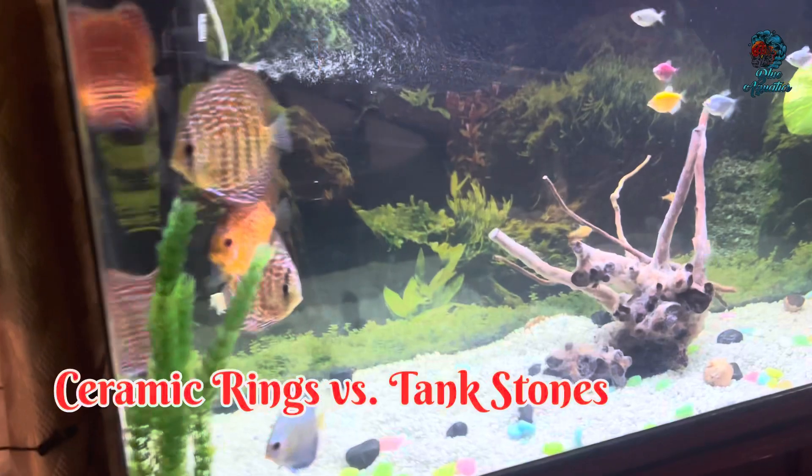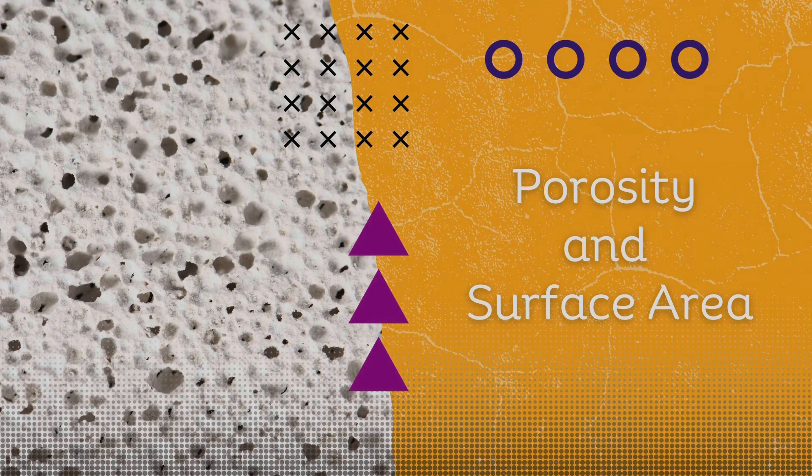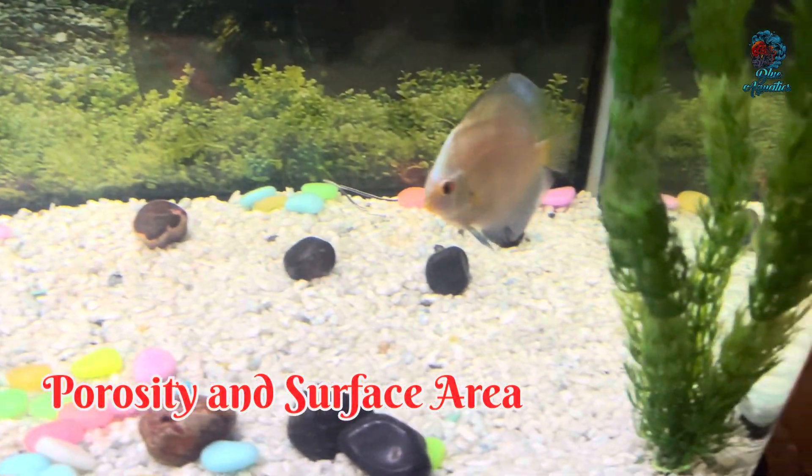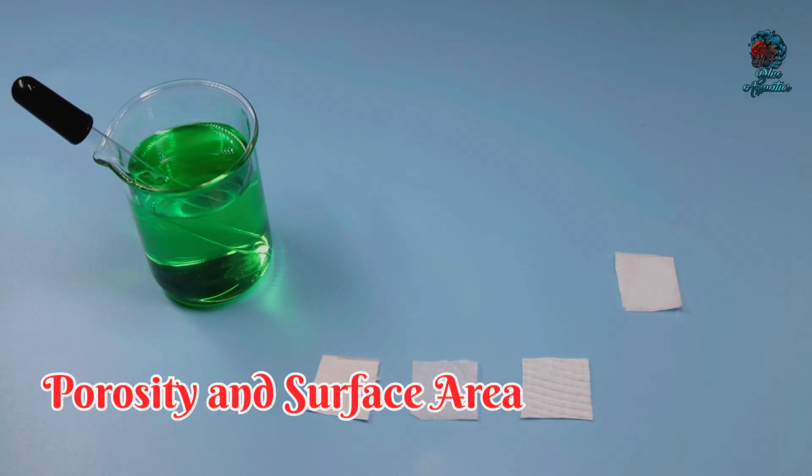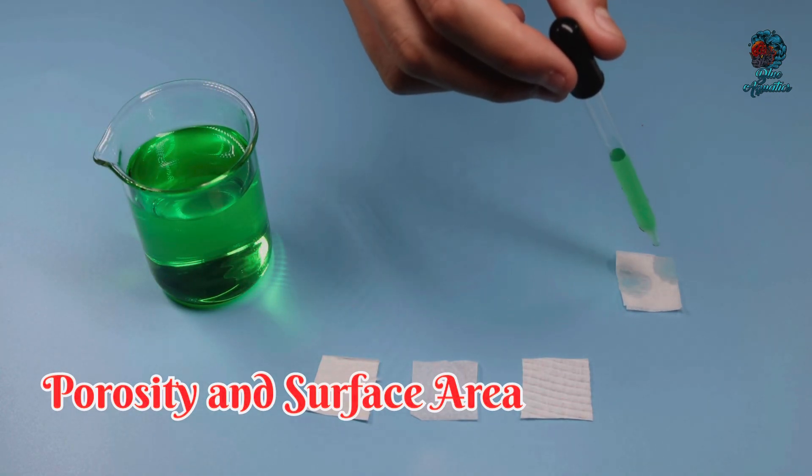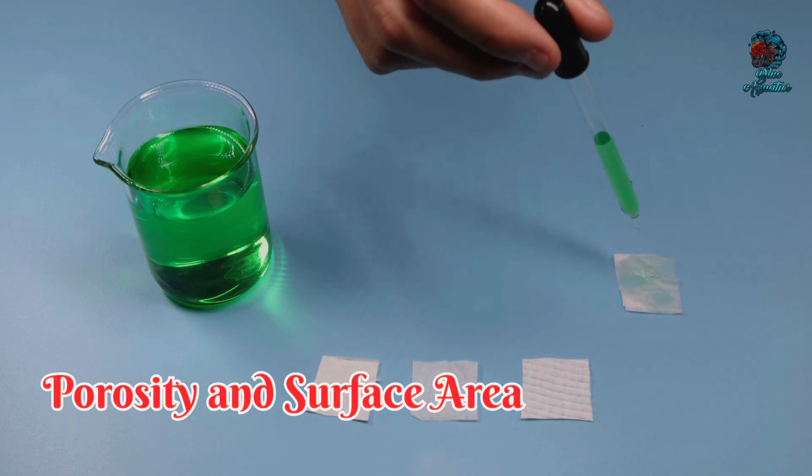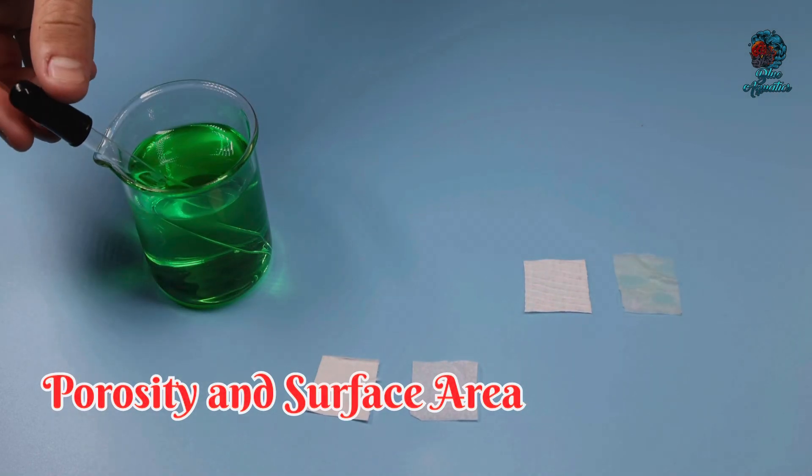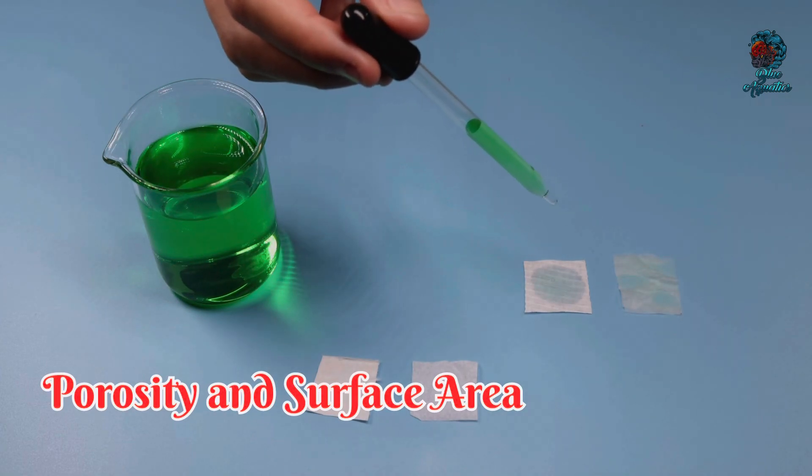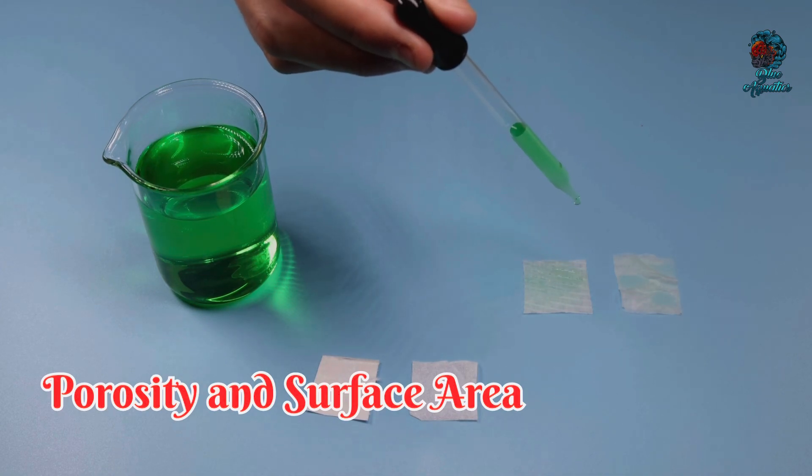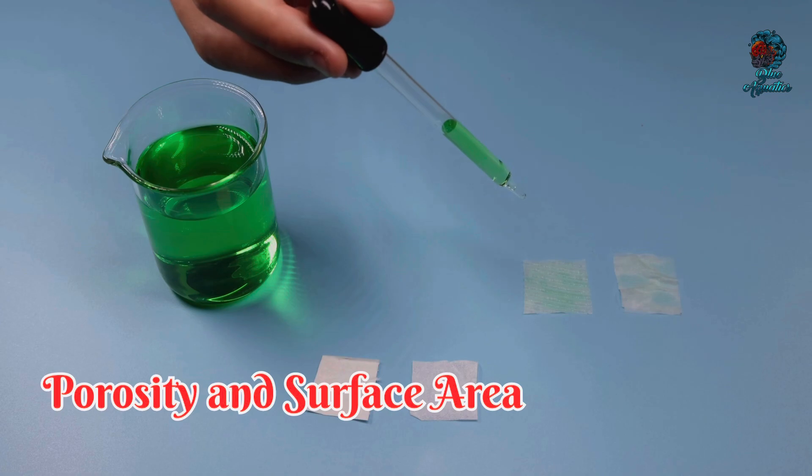Porosity and surface area. Let's delve deeper into the concept of porosity and surface area. Porosity refers to the presence of tiny holes and spaces within a material. These pores provide a large surface area for bacteria to attach and grow. Ceramic rings are highly porous, which means they offer ample surface area for beneficial bacteria to thrive.